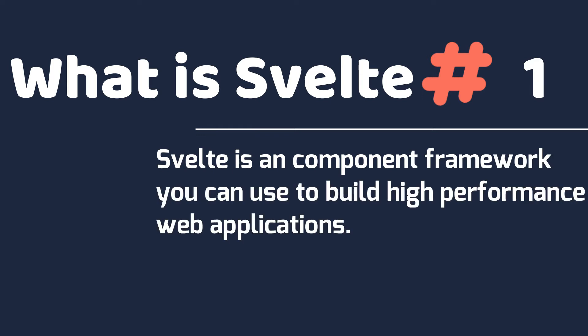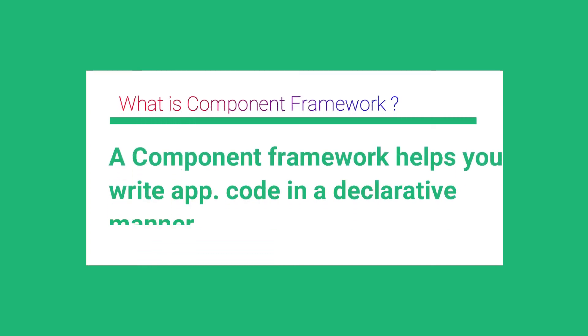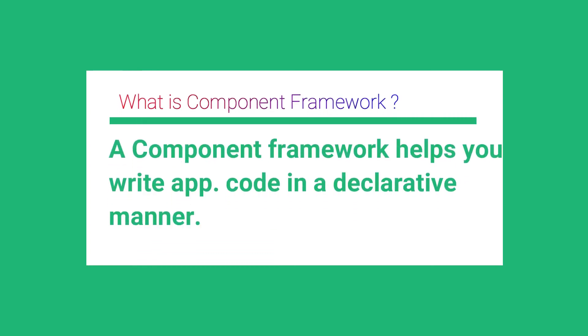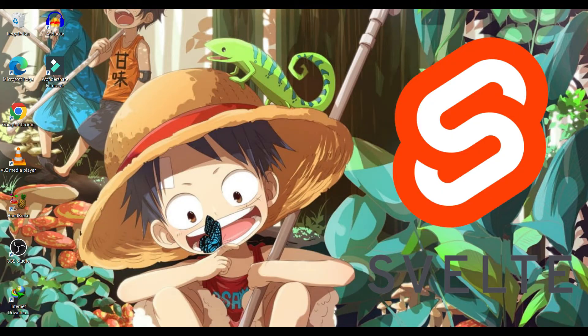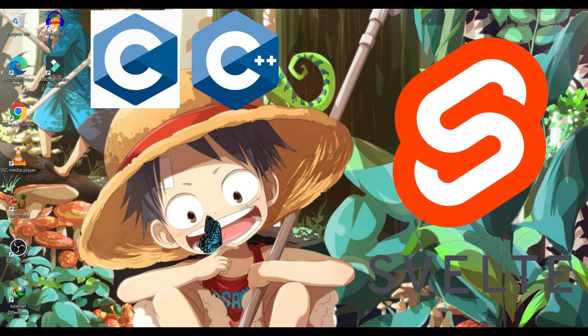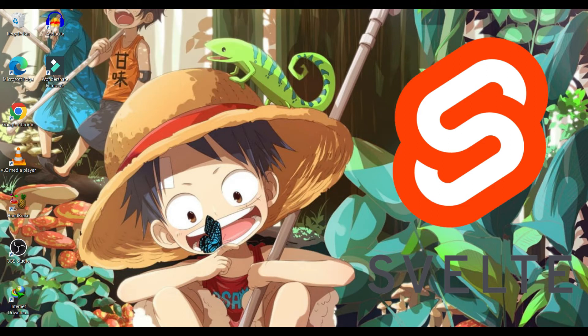Svelte is a component framework you can use to build high performance web applications. A component framework helps you write application code in a declarative manner. If you've worked with programming languages like C or C++, you're probably aware of the imperative programming model, where we list down steps explicitly and ask the library to do one thing after the other. In the declarative version, we are simply saying what outcome we want. We just tell Svelte what we want the UI to look like and it takes care of the rest. It's a lot easier to read and write and there is no code duplication.